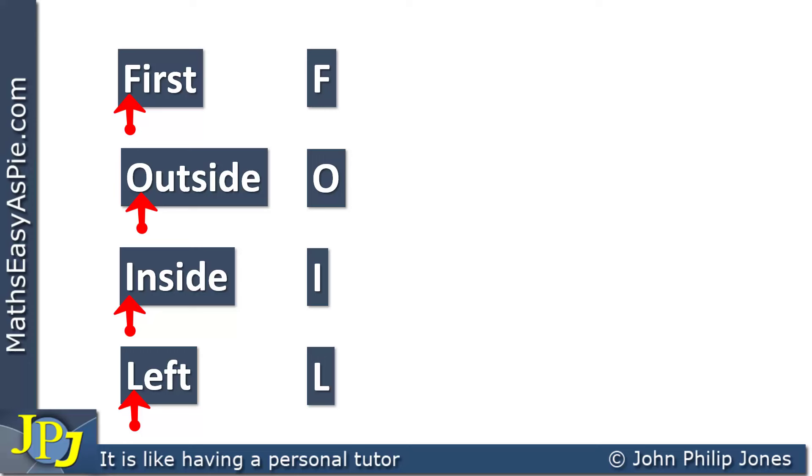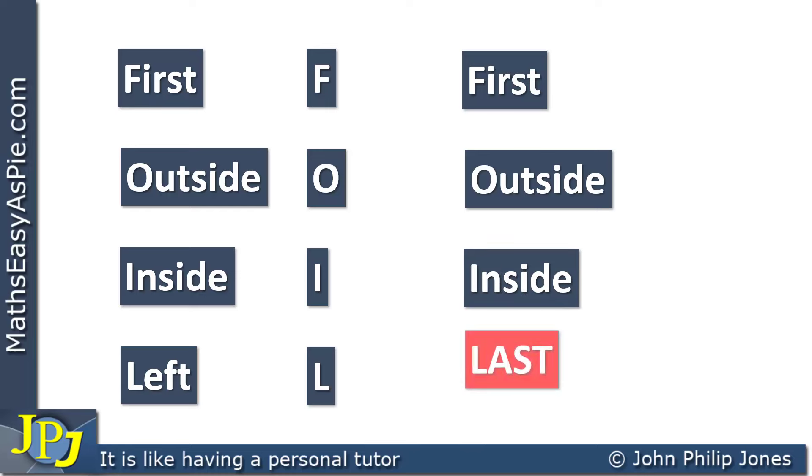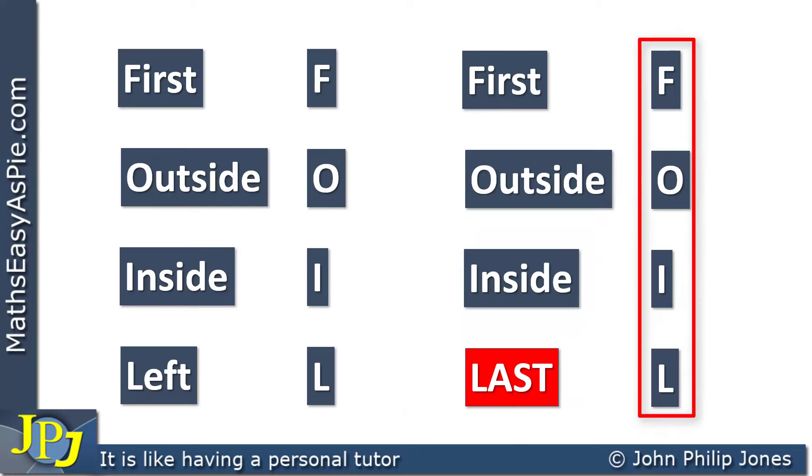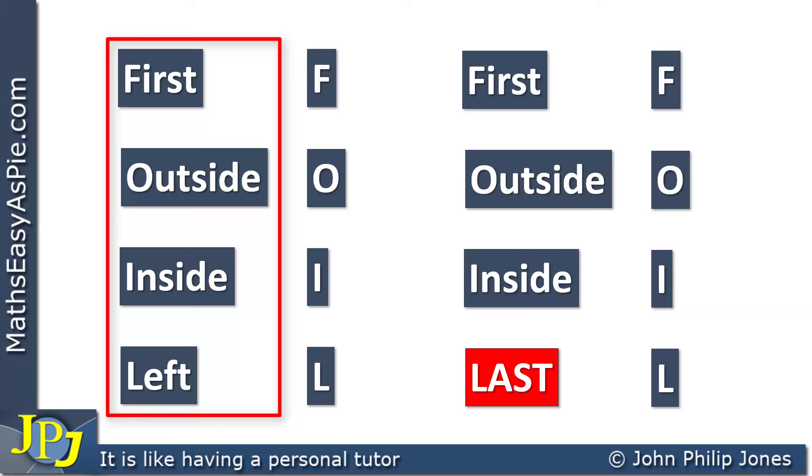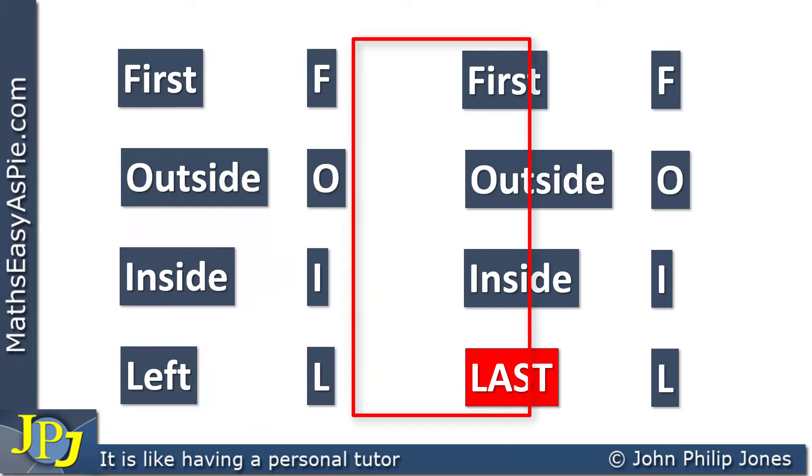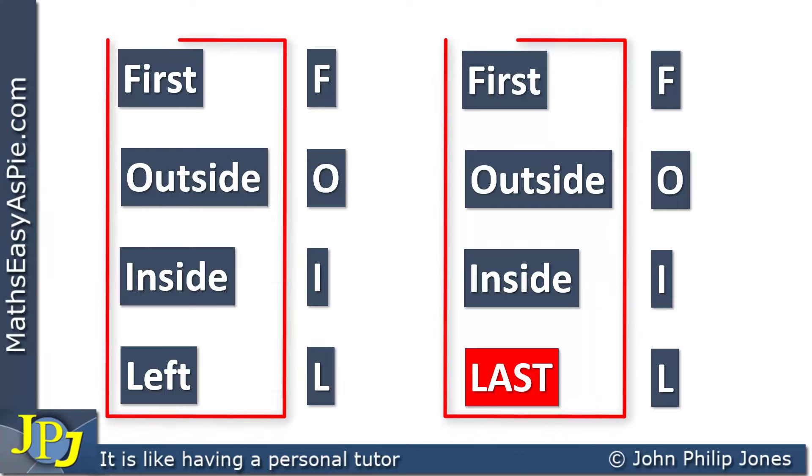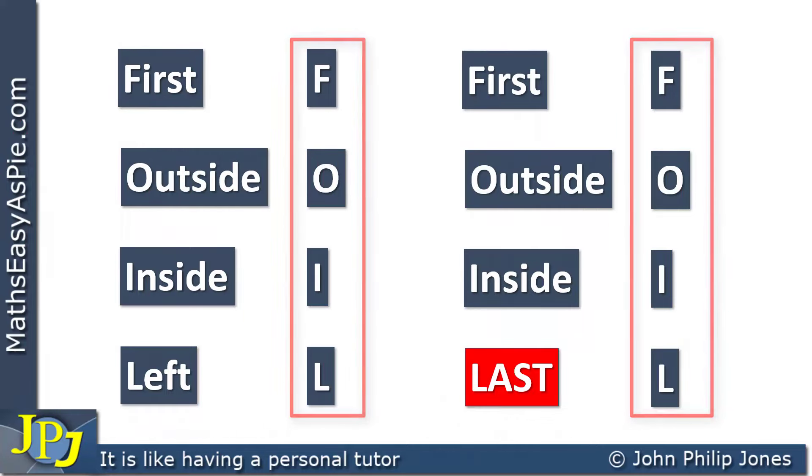Now, there's another way in which you can do this that's often used by people. It's where you take first, outside, inside, and last, and it still spells FOIL, as you can see. So take your choice to which one you use to help you memorize what the order of the multiplications are, but both of these examples spell FOIL, and that's the memory aid.